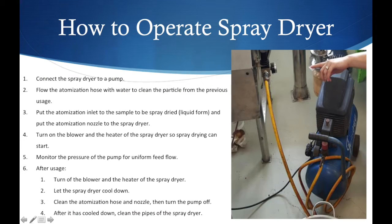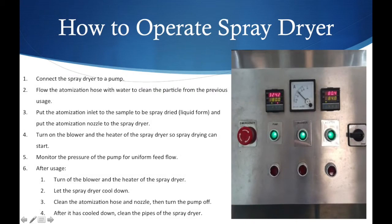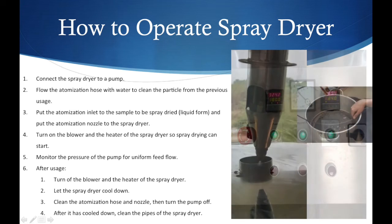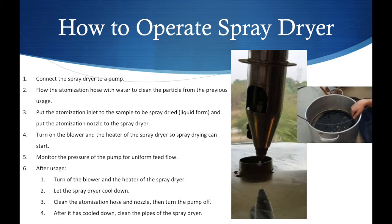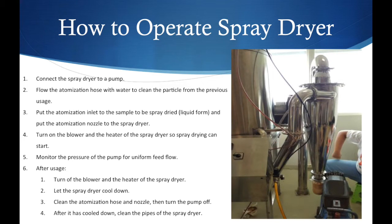To operate the spray dryer: first, connect the spray dryer to a pump. Second, flush the atomization hose with water to clean particles from previous usage. Then put the atomization inlet into the sample to be spray dried and attach the atomization nozzle to the spray dryer. Turn on the blower and the heater so spray drying can start, and monitor the pressure of the pump for uniform feed flow.